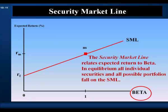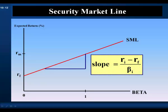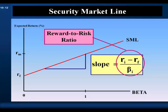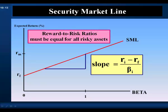Therefore, in equilibrium, all individual securities and all possible portfolios must fall on the security market line. The slope of the security market line is asset I's risk premium divided by asset I's beta — it's asset I's unit price of risk, also called the reward-to-risk ratio. In equilibrium, the reward-to-risk ratios must be equal for all assets, because in competitive financial markets, risks must be priced the same for all risky assets.